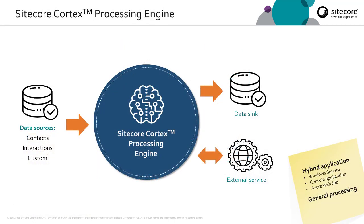Now here we have the new SciCore Cortex Processing Engine architecture. We have a variety of different data sources. We can have XDB data out of the box — contacts and interactions — but you can also create your own custom data sources. For example, you could be pulling data from an external service or even the SciCore content tree. We can push data to a variety of different data syncs as well, such as the reporting database. We can also integrate with external services both for consuming data, sending data, or even processing data.